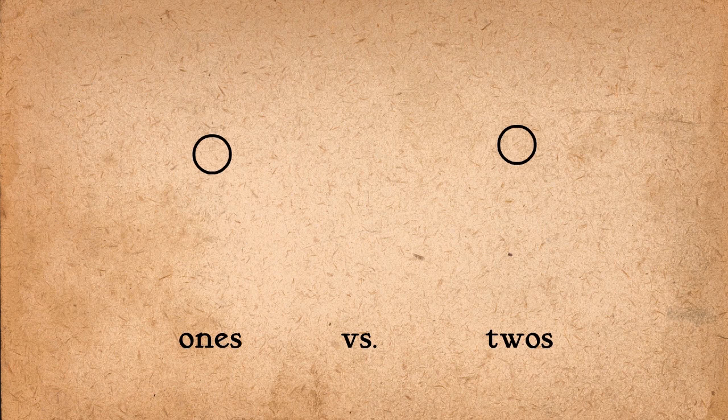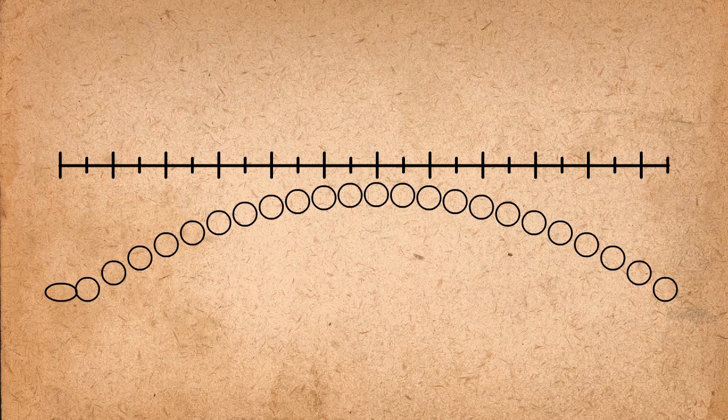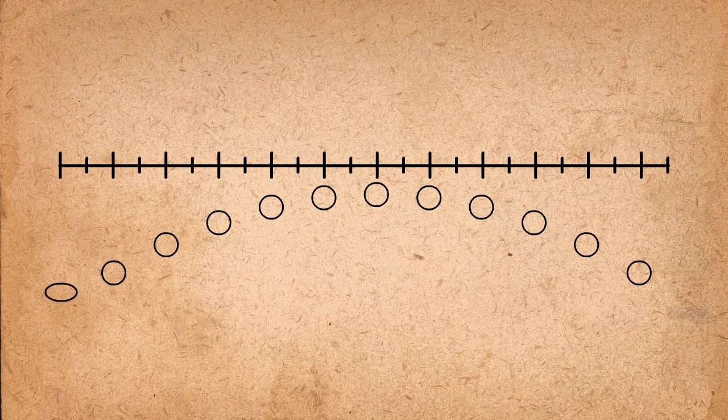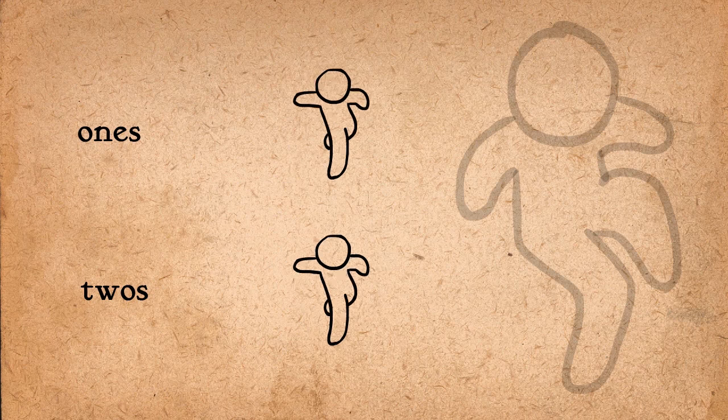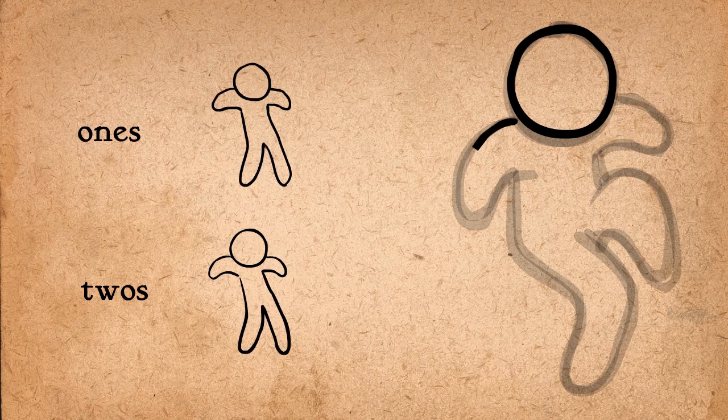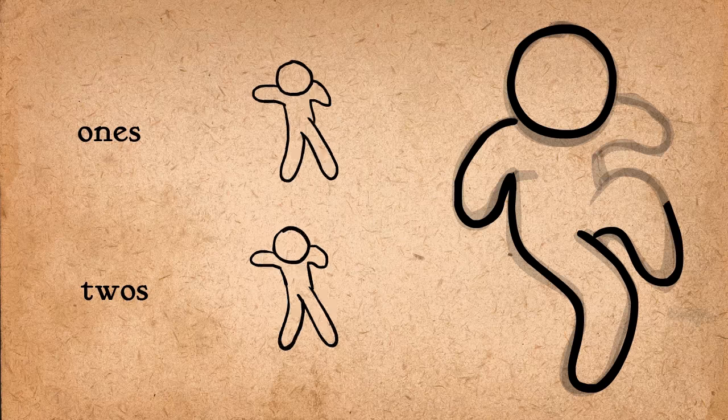It's actually very common to draw on twos rather than ones for a few reasons. First, it cuts the amount of work in half. Second, it actually makes slow actions look smoother than if you were to draw every frame because the precision needed to draw in between two very close drawings can lead to the animation looking jittery.